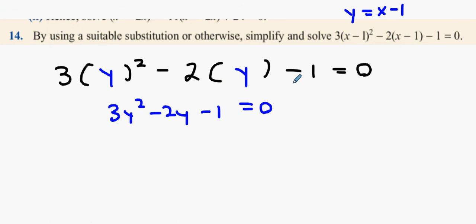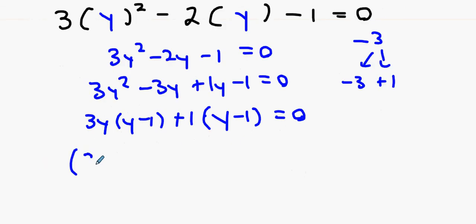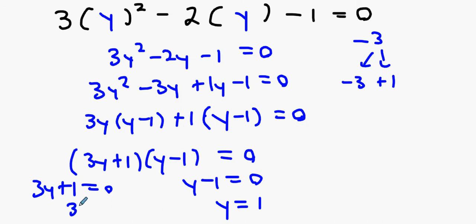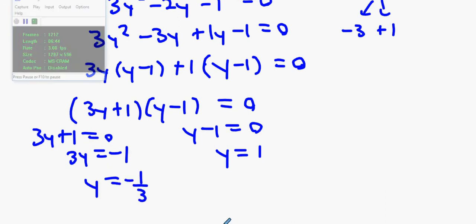You have a reference number of minus 3, which is minus 3 and plus 1. You then get 3y squared minus 3y plus 1y minus 1 equals 0. 3y into y minus 1 equals 0. 3y into y minus 1. Right. 1 into y minus 1. Plus 1 into y minus 1 equals 0. Now, what you're going to get here is 3y plus 1, y minus 1 equals 0. y minus 1 equals 0, y equals 1. 3y plus 1 equals 0. 3y equals minus 1. y equals minus 1/3.